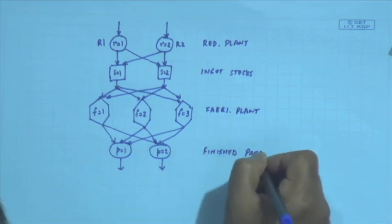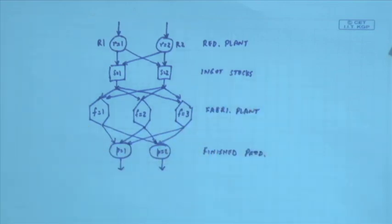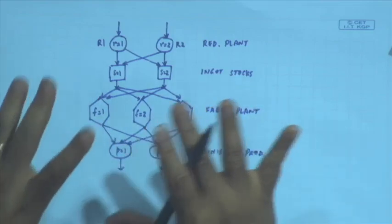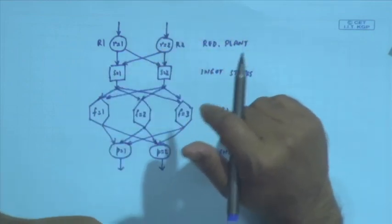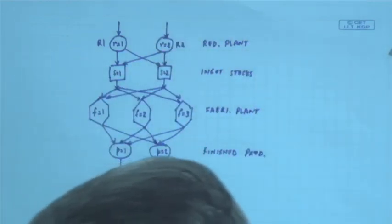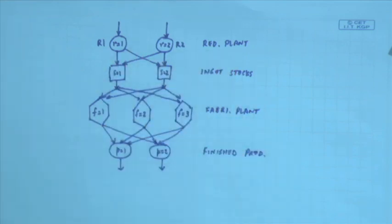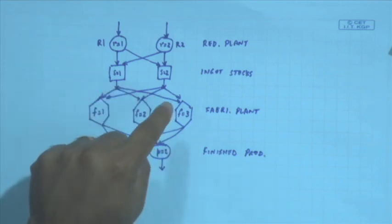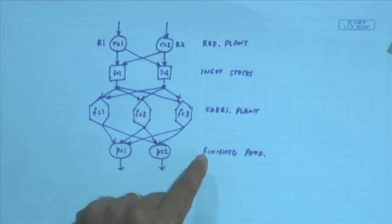When you talk to industry and they describe the problem, they give you such statements. You need to come back to your office and try to understand the flow of the whole material and produce block diagrams. In total: two reduction plants (R = 1 and 2), two ingot stocks (S = 1 and 2), three fabricating plants (F = 1, 2, 3), and two finished products (P = 1 and P = 2). The first paragraph is done.